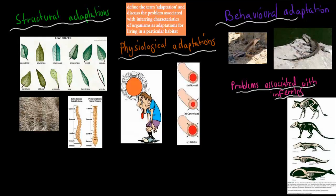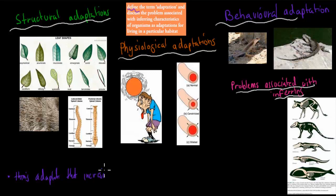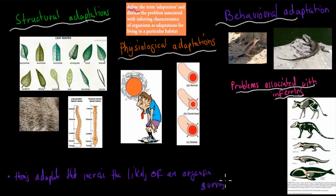There are three main different types of adaptations. Adaptations are structures or traits — they can be structural, physiological, or behavioral — that increase the likelihood of an organism surviving in the environment it's in. An organism is just any living thing. So that's the definition: something that gives an organism a better chance of survival.